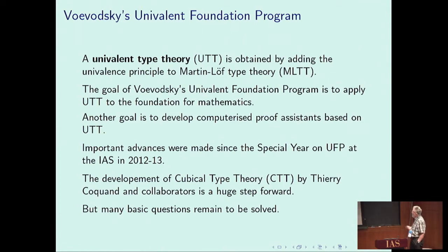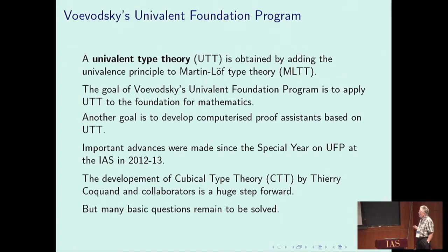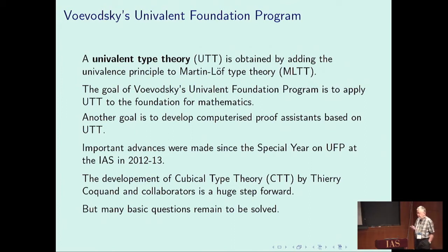A univalent type theory is obtained by adding the univalence principle to Martin-Löf type theory. The goal of the Voevodsky Univalent Foundation program is to apply univalent type theory to the foundations of mathematics, and another goal is to develop a computerized proof assistant based on univalent type theory. Computerized proof assistants played an important role in the discovery of univalent type theory.